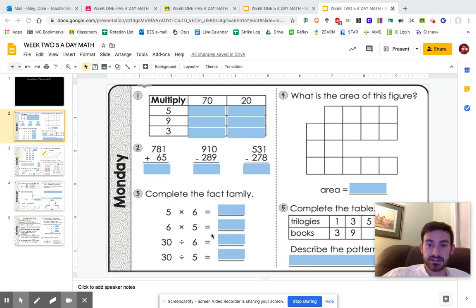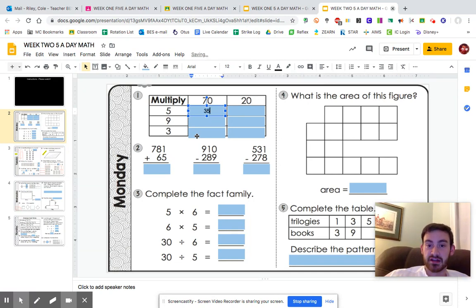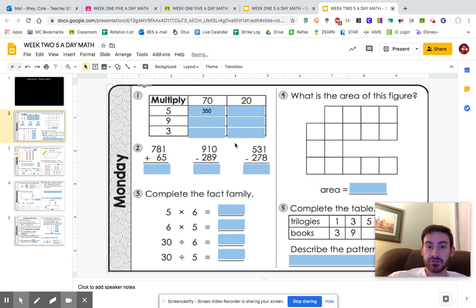Alright math class, you have a new five-day math assignment. Just some quick instructions. When you put an answer in a box, click it one time and enter your answer. For example, five times 70: if you know five times seven is 35, and there's one zero after 70, you just put one zero after your answer.